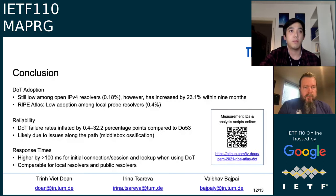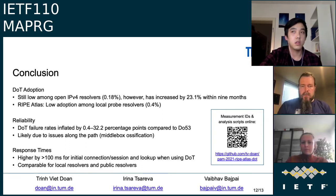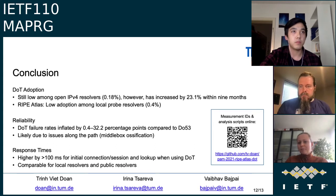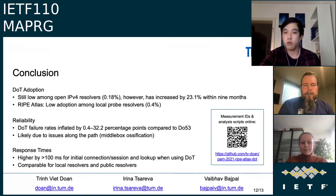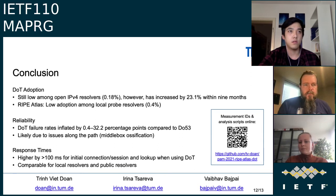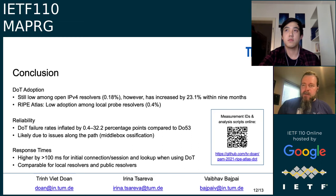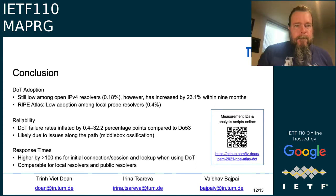All measurement materials are available on the GitHub repository, along with the paper with more details. A question came from chat about DoH compared to DoT — with RIPE Atlas you cannot run DoH measurements, and there are already some papers that have looked at that, so it's not something the authors plan to look into. Thanks to Viet — this work was brought to MAPRG before PAM publication, which is something the chairs try to do.